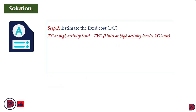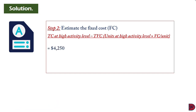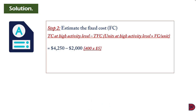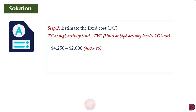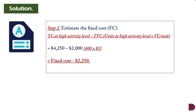To find the fixed cost, take the total cost at the highest activity level and subtract the total variable cost. Fixed cost = $4,250 − (400 × $5) = $4,250 − $2,000 = $2,250.